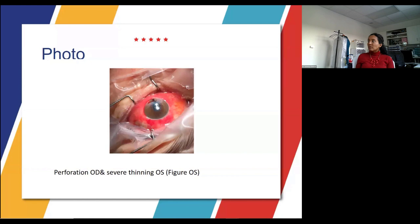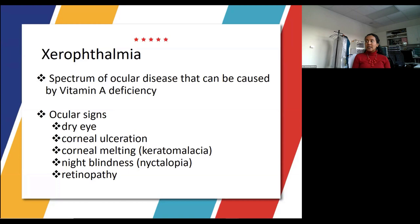Recall that xerophthalmia is a spectrum of ocular diseases that can be caused by vitamin A deficiency. The signs include dry eye, corneal ulceration, melting or keratomalacia as we saw in our last case, night blindness or nyctalopia, and also retinopathy.